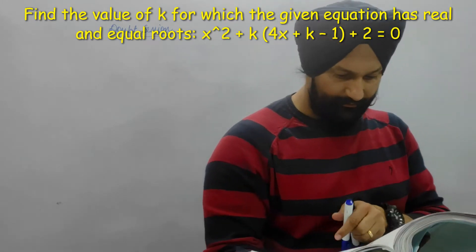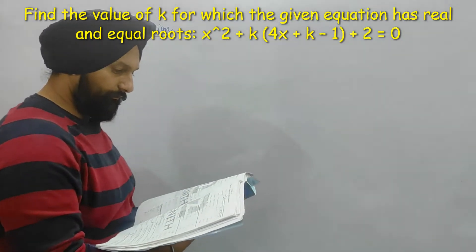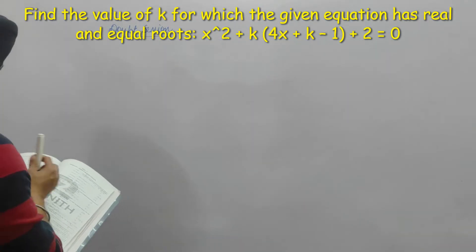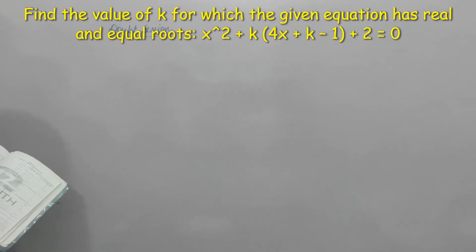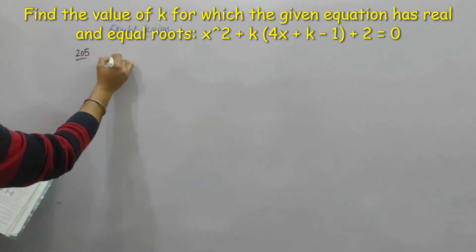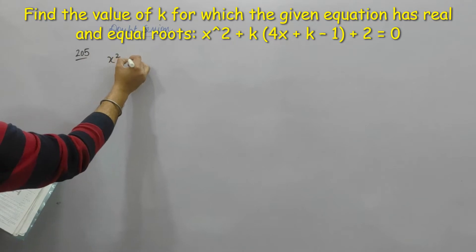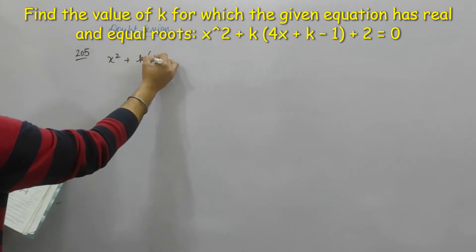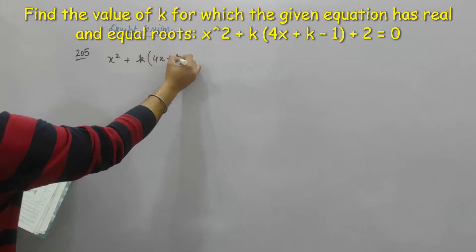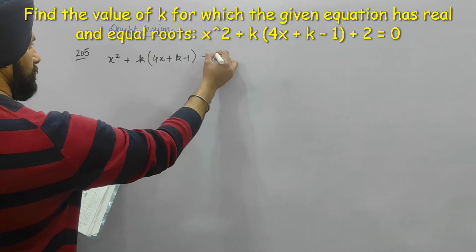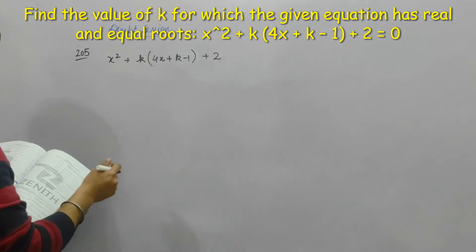It says find the nature of the roots and hence find the roots. It says x square, x square plus k into 4x plus k minus 1 plus 2, so this is all we are saying is equal to 0.